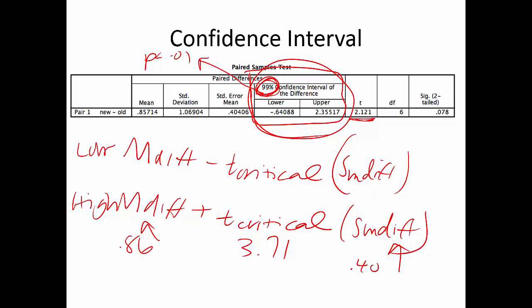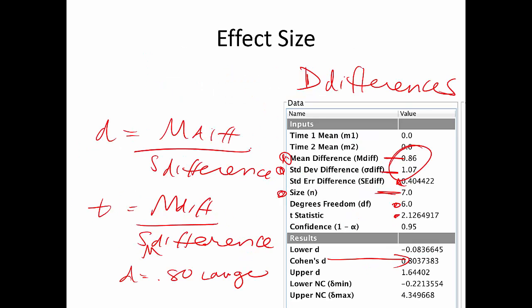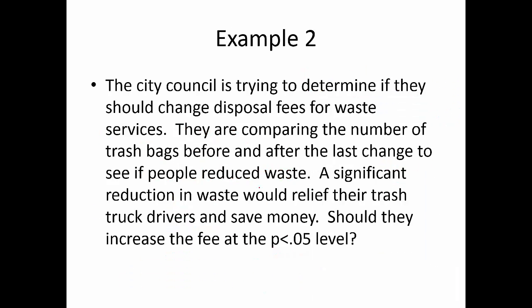Looking at the confidence interval, it does cross zero. When interpreting confidence intervals in this context, always ask whether the difference-score confidence interval crosses zero. If it crosses zero, it is usually not statistically significant. That wraps up the first example — let's do one more.